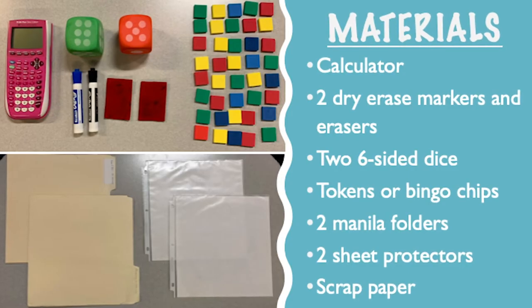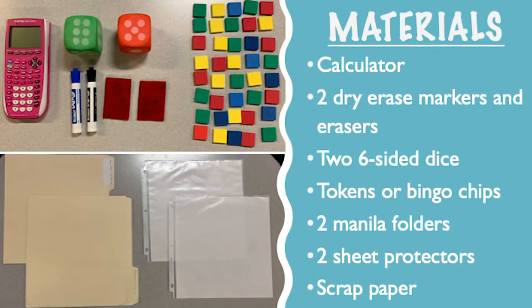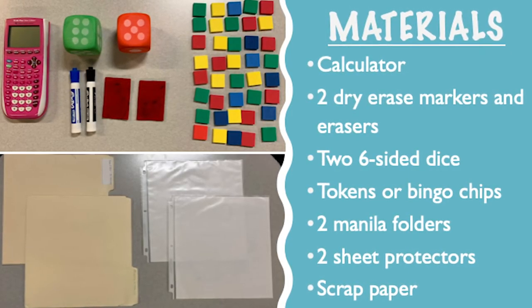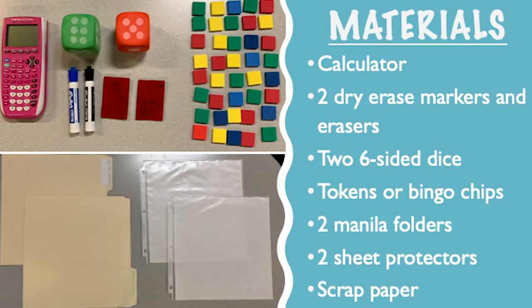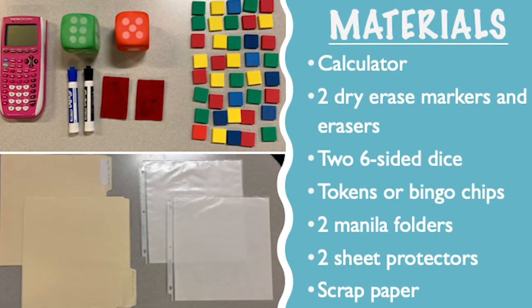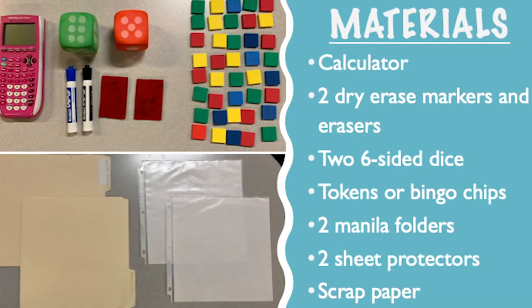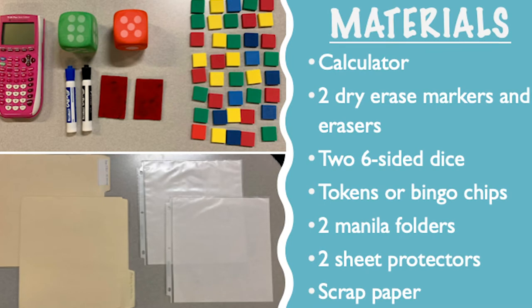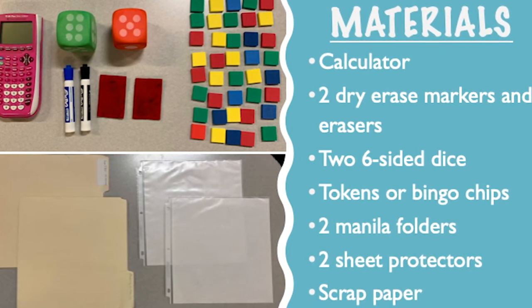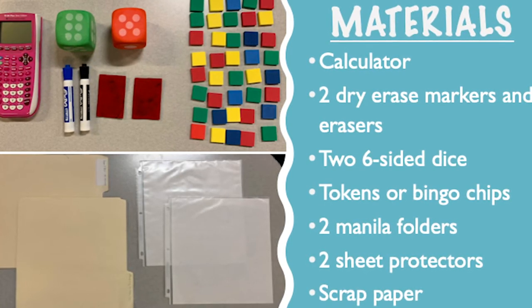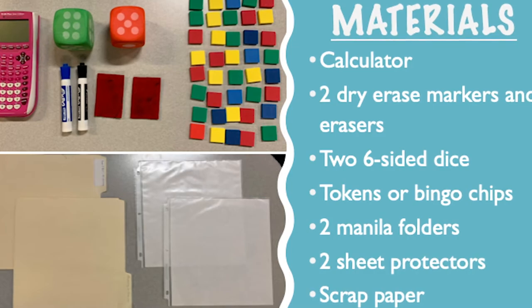To get started, you will need to collect the following items to play: a calculator, two dry erase markers and erasers, two six-sided dice, tokens or bingo chips, two manila folders, two sheet protectors, and scrap paper.